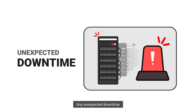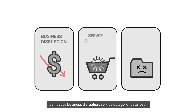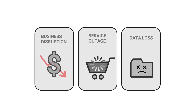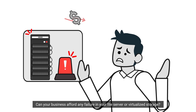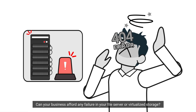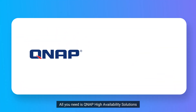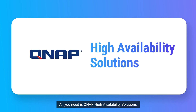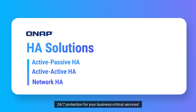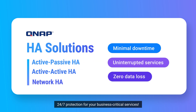Any unexpected downtime, no matter how minor, can cause business disruption, service outage, or data loss. Can your business afford any failure in your file server or virtualized storage? All you need is QNAP High Availability Solutions — 24/7 protection for your business critical services.